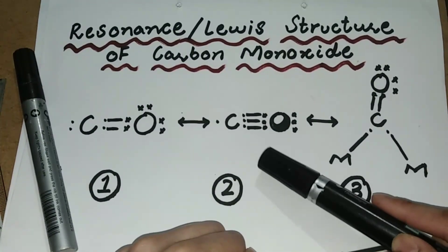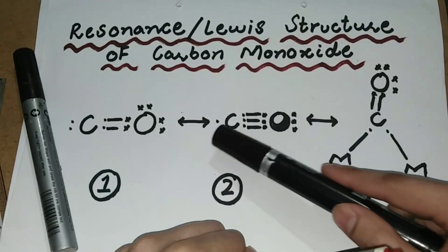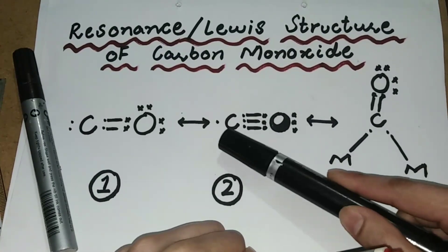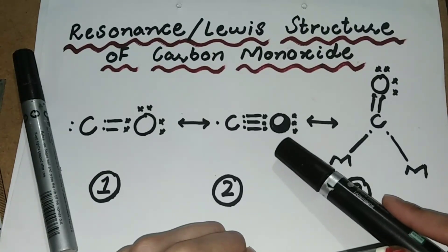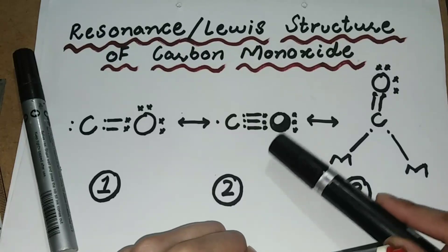Carbon and oxygen form a triple bond between them. Carbon has only one electron on it and the oxygen atom has three electrons on it that further react to form bonds with other atoms.